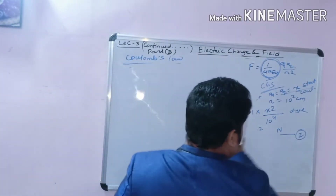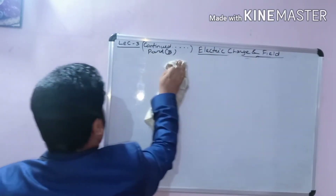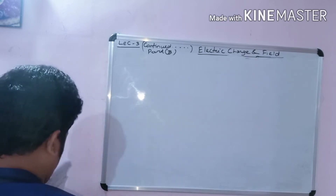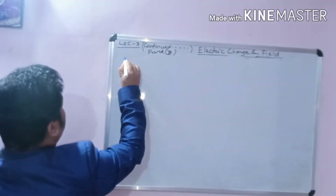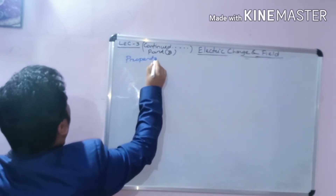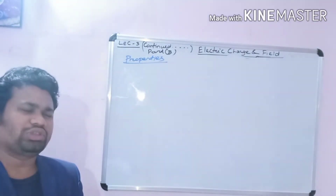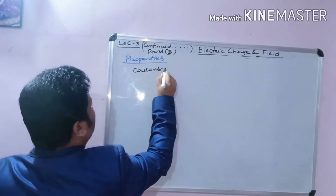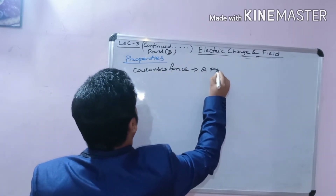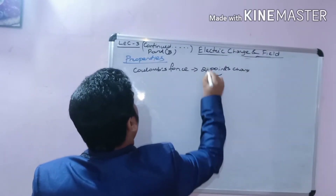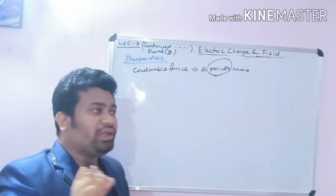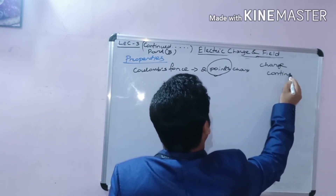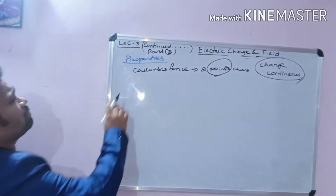Now let's discuss properties of Coulomb's force. We will look at the applications, vector analysis, and certain properties. Coulomb's force acts only between two point charges — not line charges or continuous charges. The concept of point charge will be discussed. In a later lecture, we will discuss continuous charge distribution; Coulomb's force applies only to point charges.